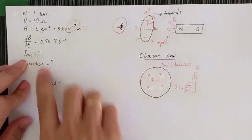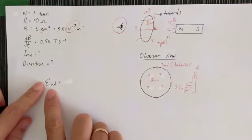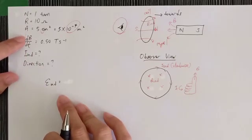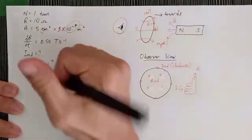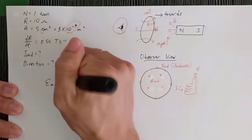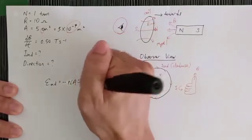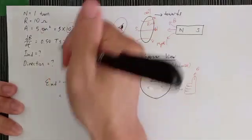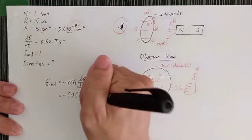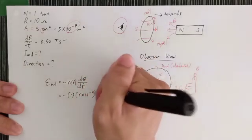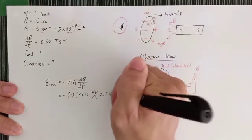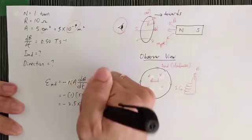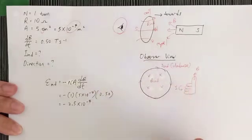To find the magnitude of the induced current, we first find the induced EMF. Since the area is constant and the magnetic field is changing, the formula is EMF = −N·A·(dB/dt). Substituting the values: N = 1, A = 5 × 10⁻⁴ m², and dB/dt = 0.50 T/s. This gives us an induced EMF of −2.5 × 10⁻⁴ volts.